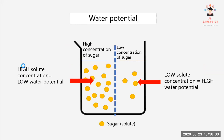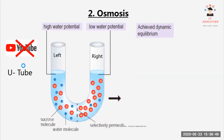Let's talk about water potential first. When we have a high solute concentration, we always have a low water potential on the opposite side. When we have a low solute concentration, we always have a high water potential.